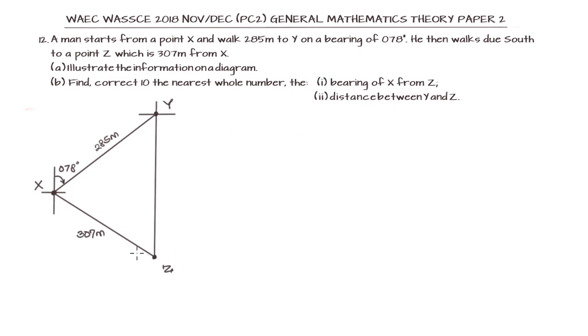Then we have to find the bearing of X from Z. Going to Z, we have to draw a cardinal point and find that bearing coming from the north on Z. We want to start from the north and measure the bearing to X. We also have to find the distance between Y and Z. We can call that x, small letter x, since it's facing capital letter X. This is the interpretation of our question.